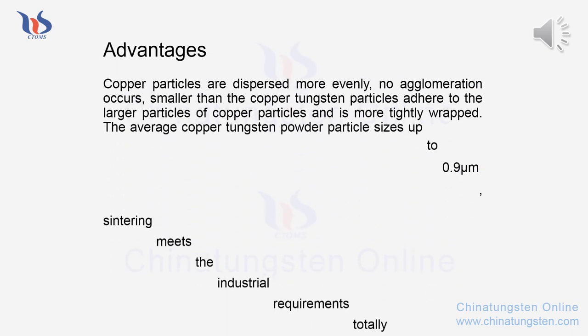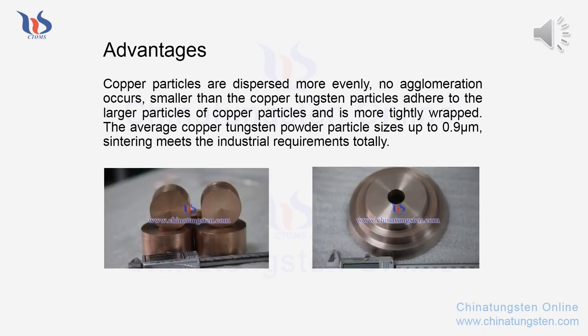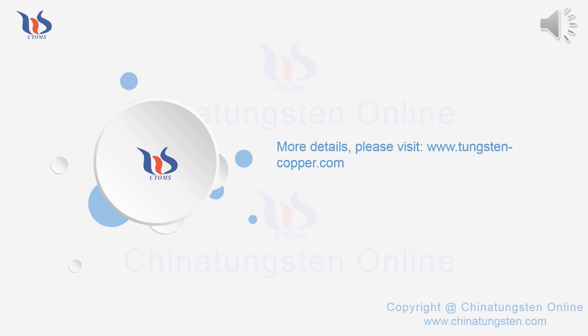Copper particles are dispersed more evenly with no agglomeration occurring. Smaller tungsten particles adhere to the larger copper particles and are more tightly wrapped. The average tungsten copper powder particle size reaches up to 0.9 micrometers, and sintering meets industrial requirements totally. For more details, please visit www.tungstencopper.com.